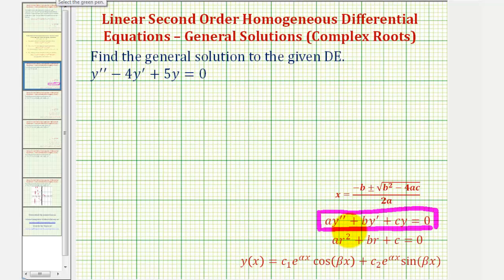And because it fits this form, we can find the general solution by determining the solutions to the characteristic equation, also called the characteristic values, and then based upon the type of solutions this quadratic has, we can determine the form of the general solution.